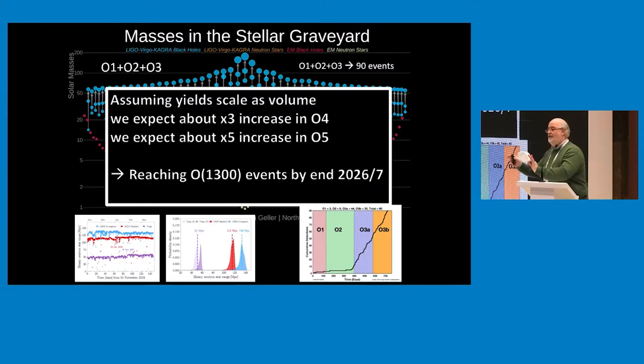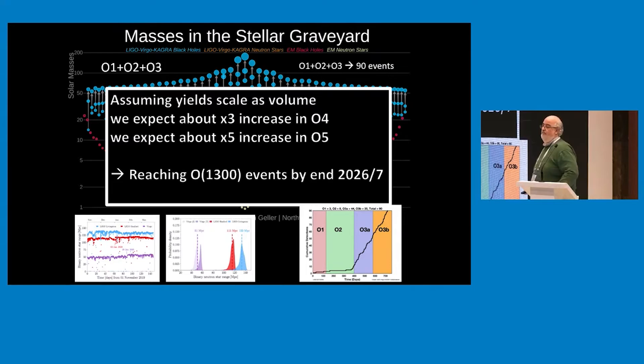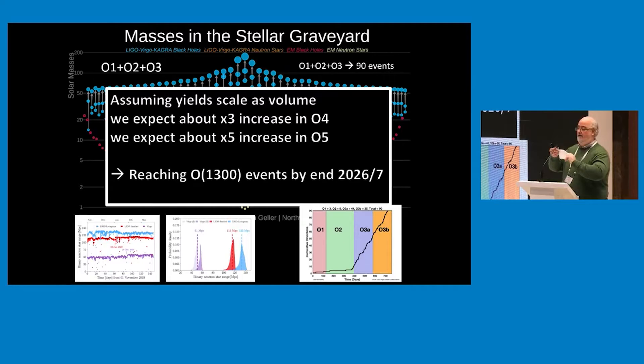So what is going to come now? What is the future? Well, assuming that yields go like the volume, and we know that we are going to increase the sensitivity in O4 and O5, we expect a factor of three more by O4, a factor of five more by O5, so roughly speaking, about 1,300 events that we will not be able anymore to put in a single plot. And I think we are not going to name them anymore. That's where we are going to be by the end of 2026-27.